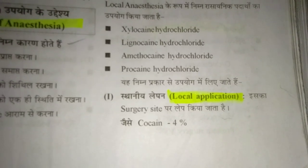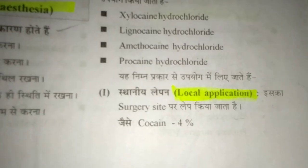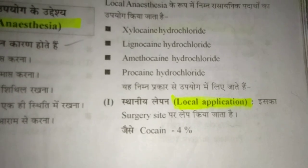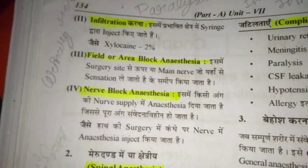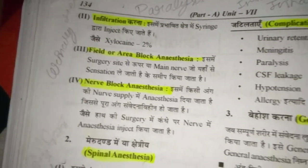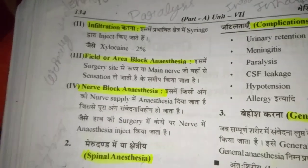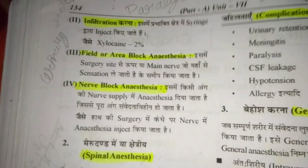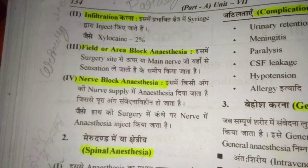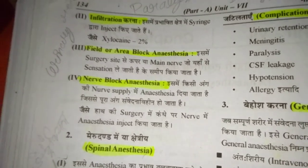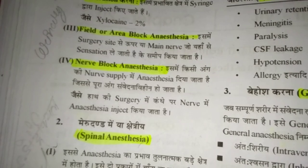Local anesthesia is used at the surgical site. For topical application, cocaine 4% may be used. For infiltration of the affected area by syringe, lignocaine 2% is used.